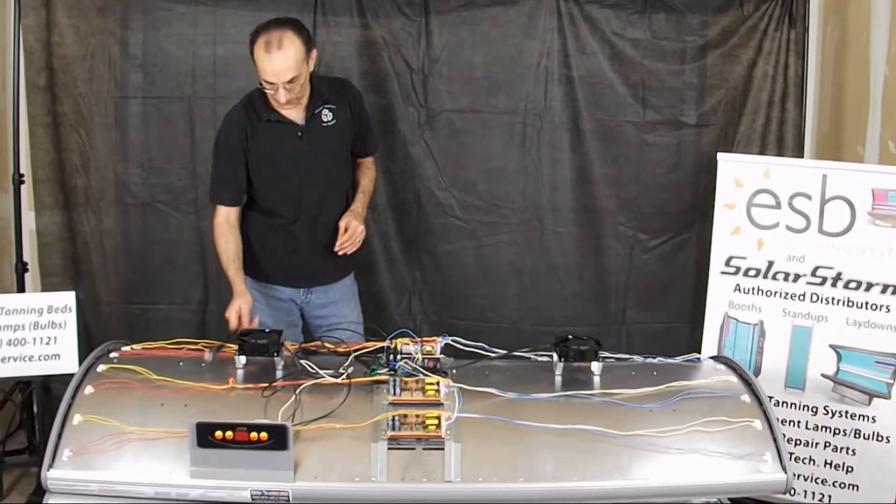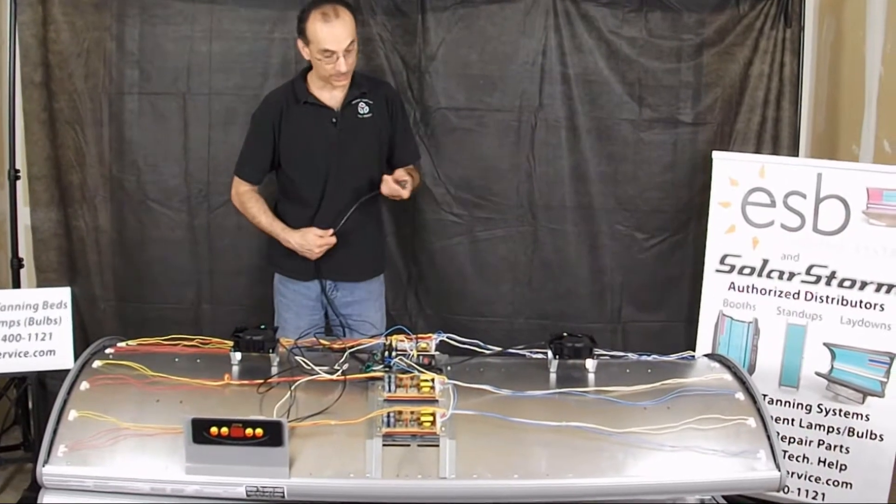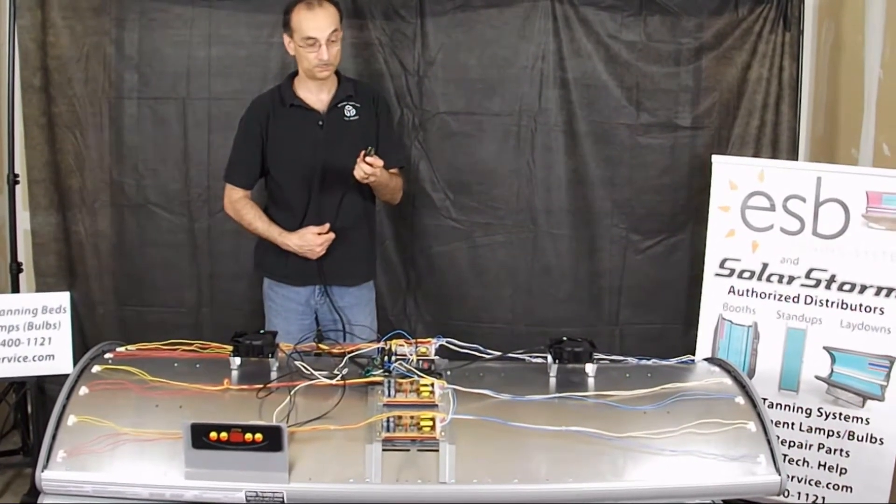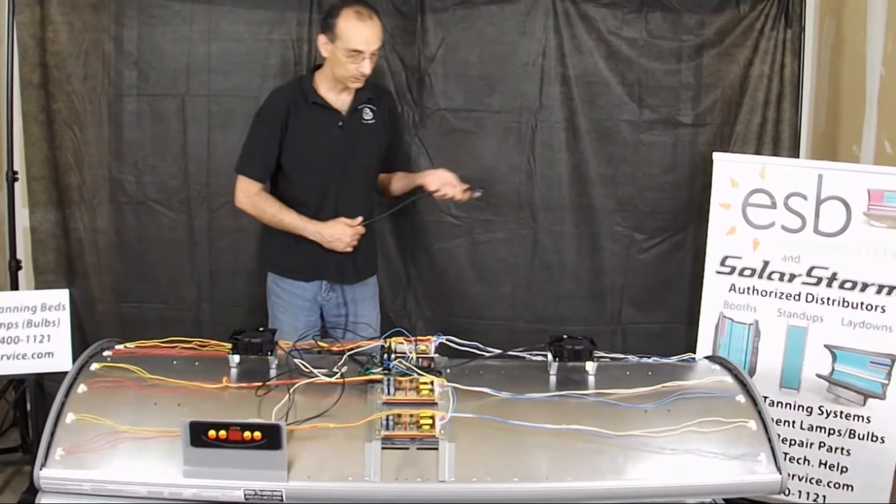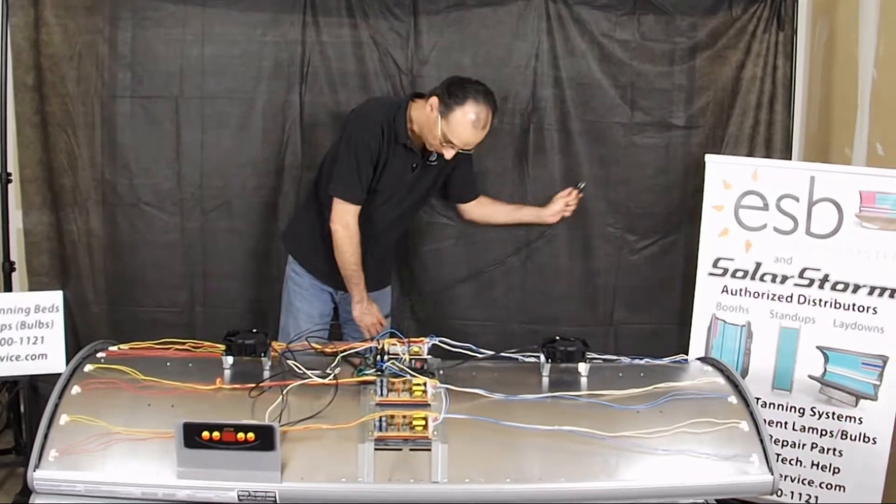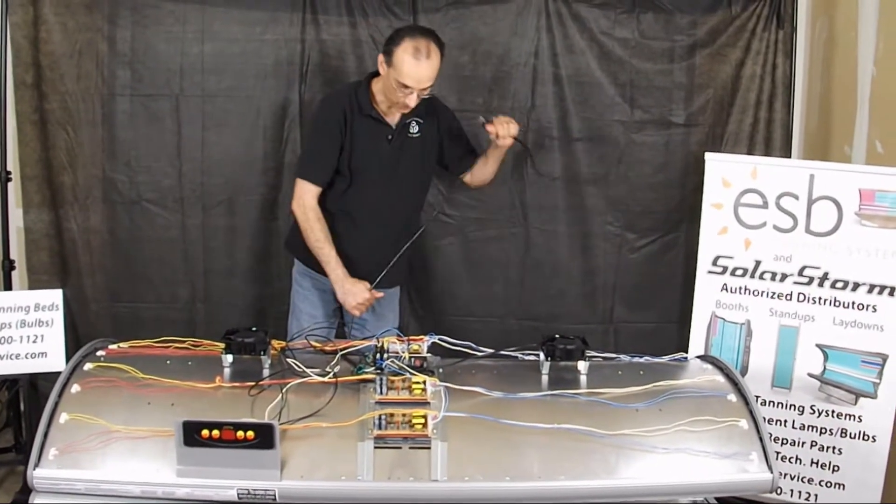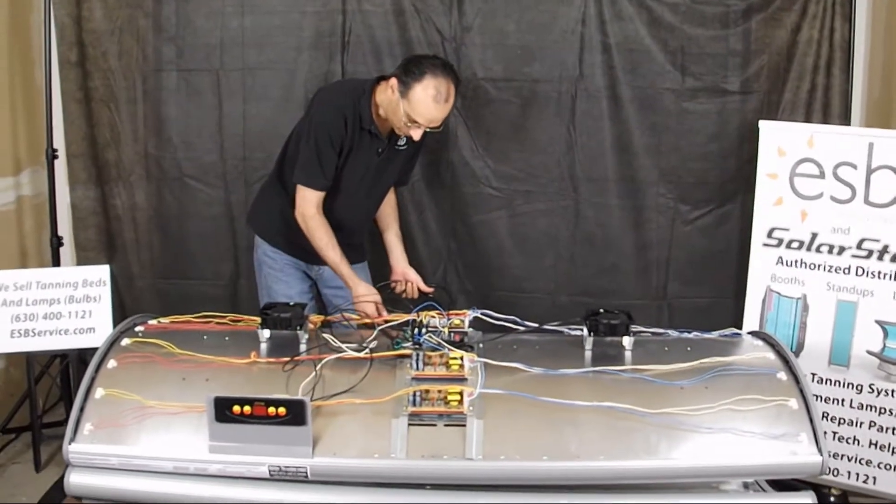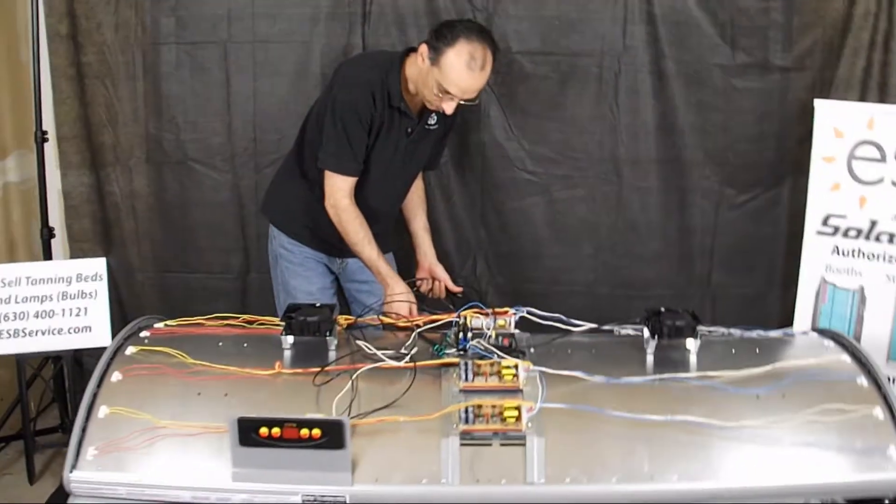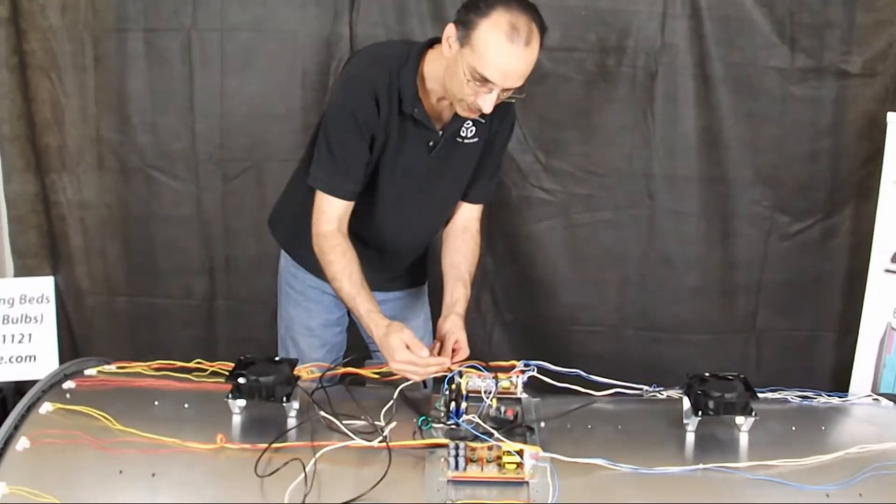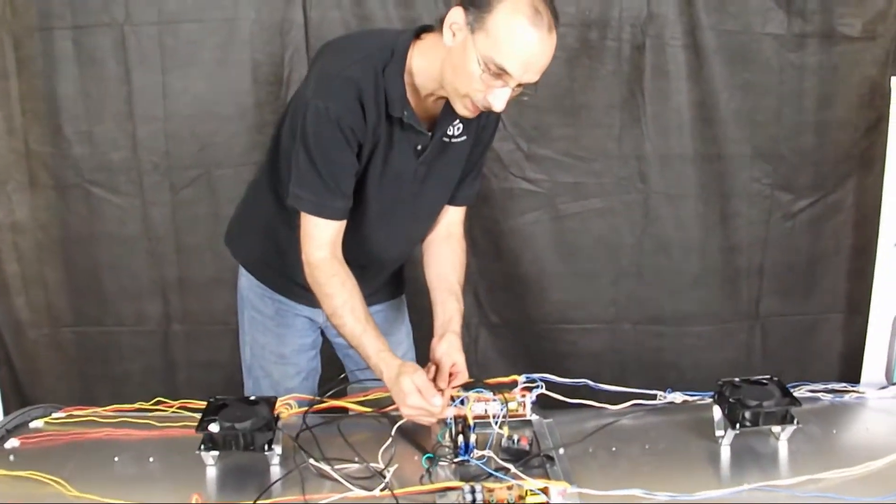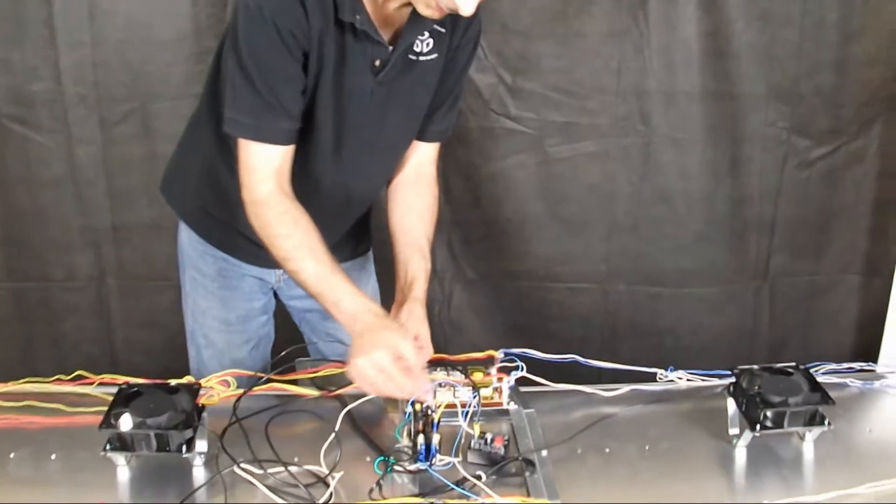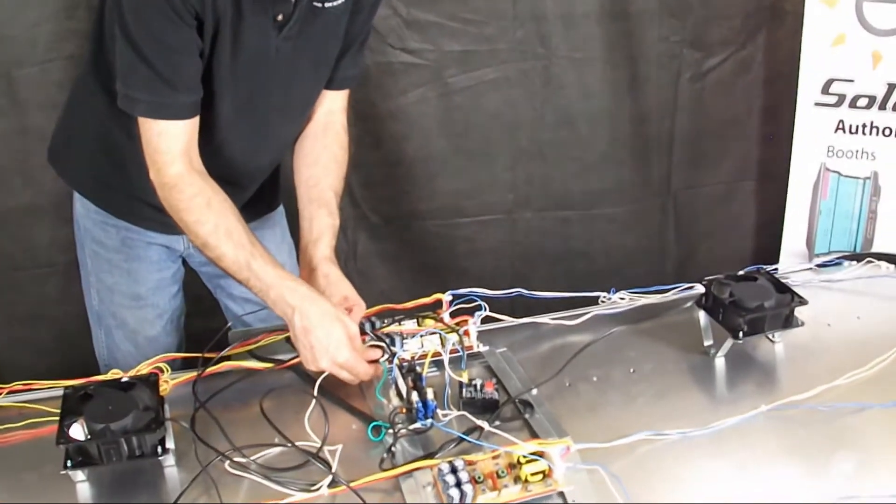So the power comes into your bed, it starts here at your power cord. You plug this into your receptacle and the power comes flowing through your main power cord here. After it goes to this metal strain relief bracket here, it comes up and it goes into the primary of your contactor. That's the first place that your power cord terminates at.